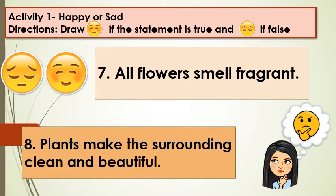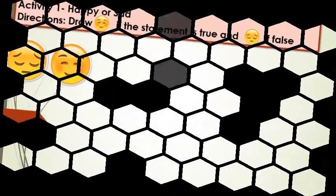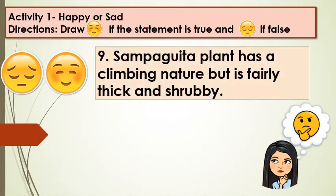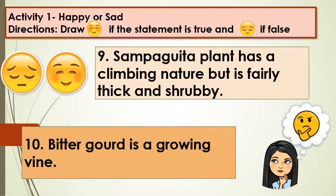Number 8: Plants make the surrounding clean and beautiful. Number 9: Sampagita plant has a climbing nature but is fairly thick and shrubby. Number 10: Bitter gourd is a growing vine.